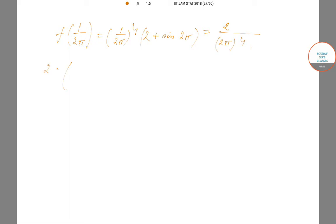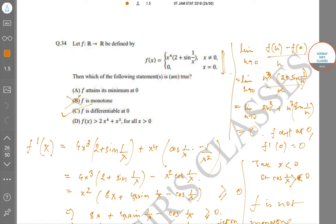And 2(1/2π)^4 + (1/2π)^3 is greater than 2/(2π)^4, which instantly gives us that D is wrong. So we just cross out D. The only thing left to check is whether F attains its minima at 0.